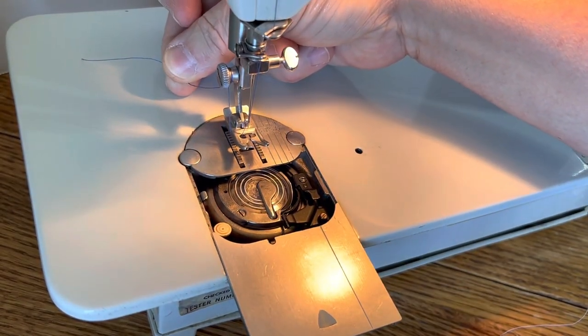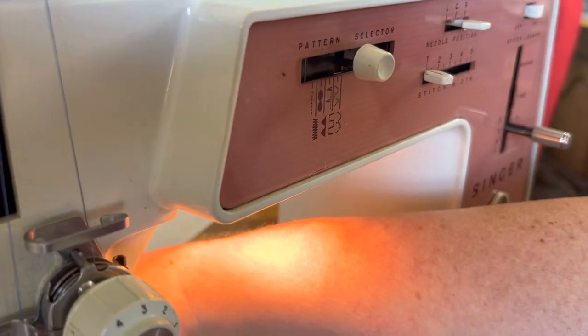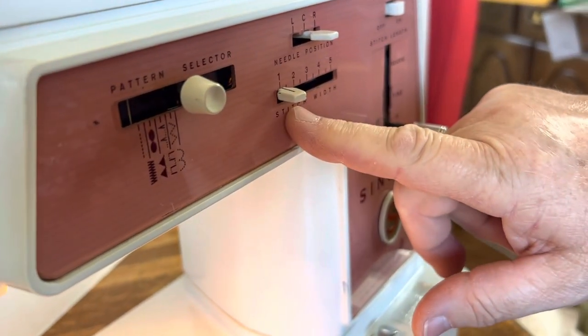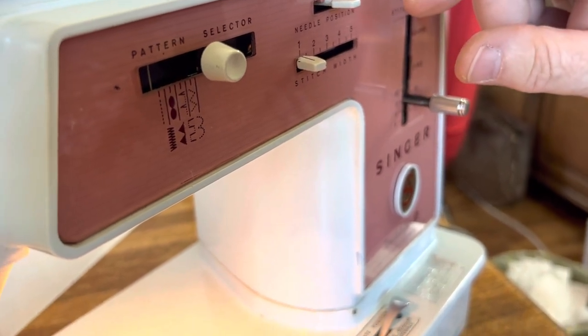Then you want to make sure on this machine that this is on a straight stitch, this is on number one, and your needle selector is on the center.